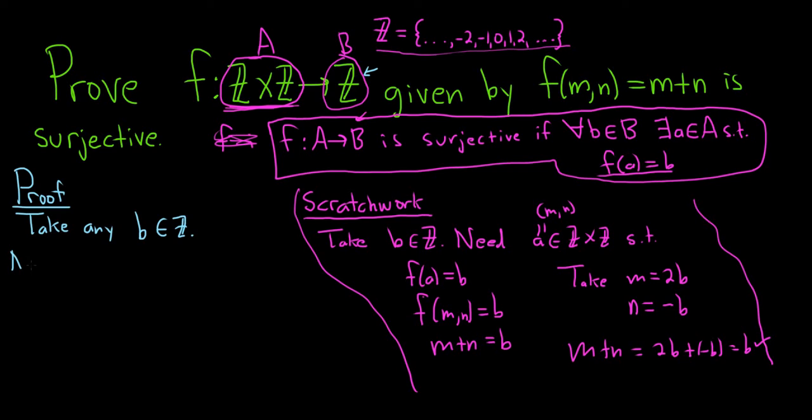And now we need to magically show the existence of a. So note, this element, which we, let's see, we said m was 2b, so 2b comma negative b, that's our other one, is in Z cross Z. So we've satisfied, we've written down this part, we've shown the existence of this part.